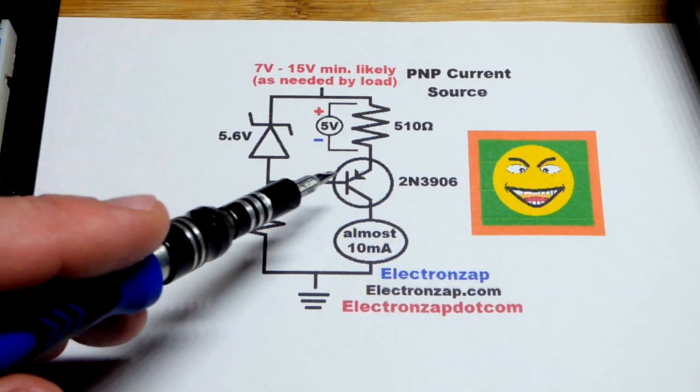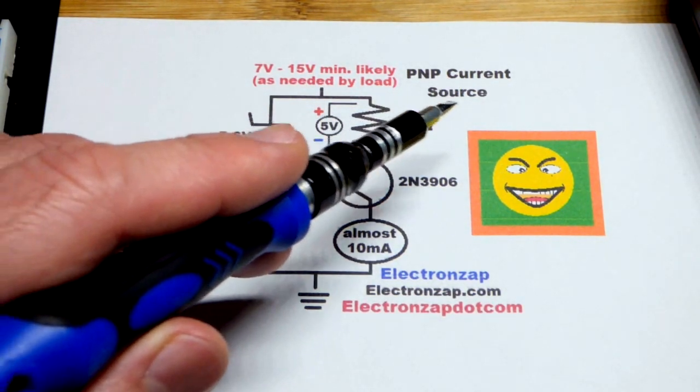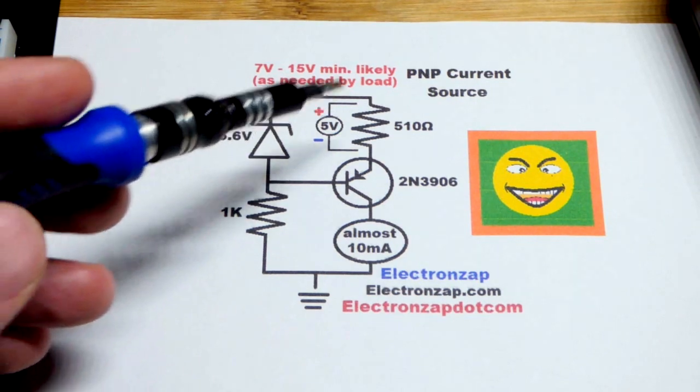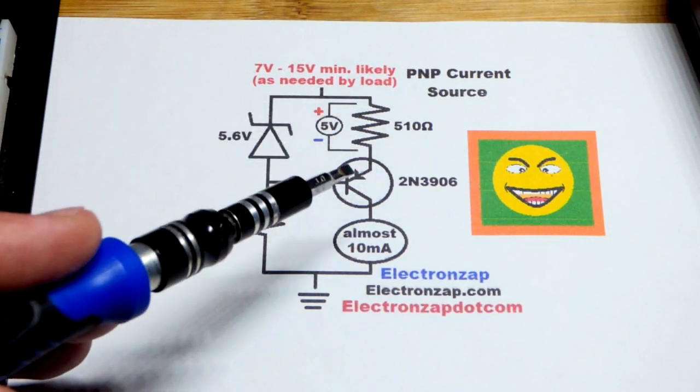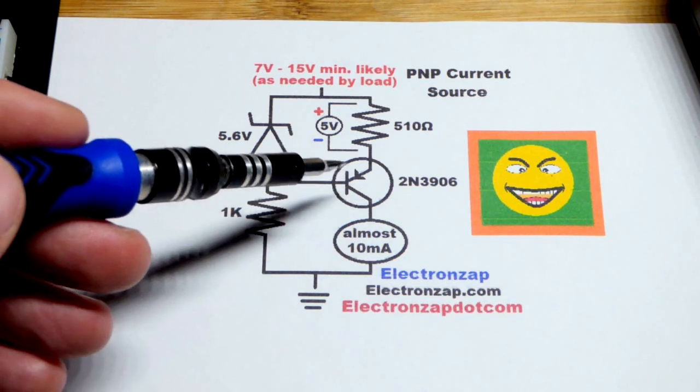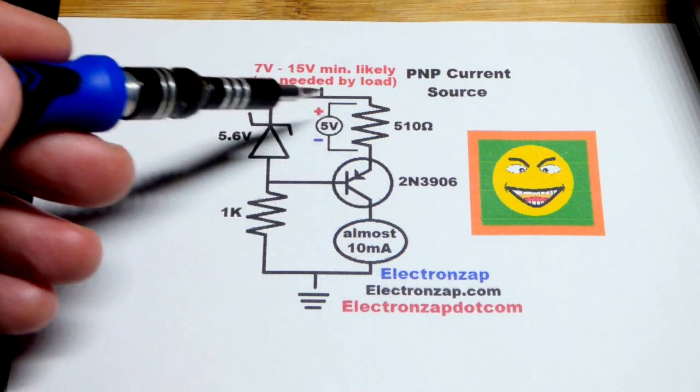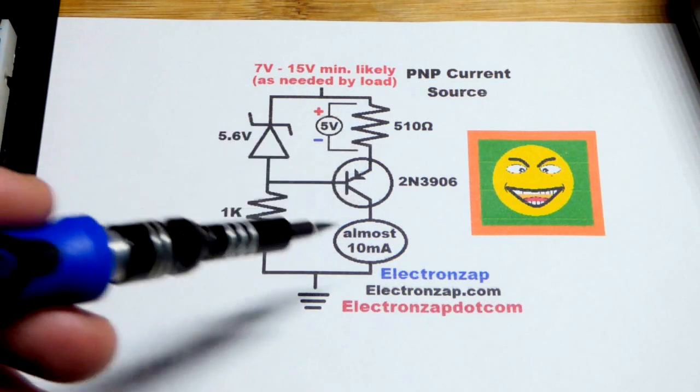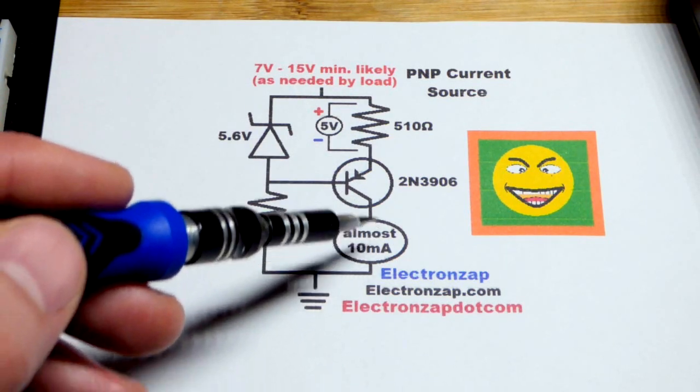So now in this video we're going to use the PNP bipolar junction transistor to make a current source. Last video we used an NPN bipolar junction transistor for basically the same circuit, but technically that one was a current sink.